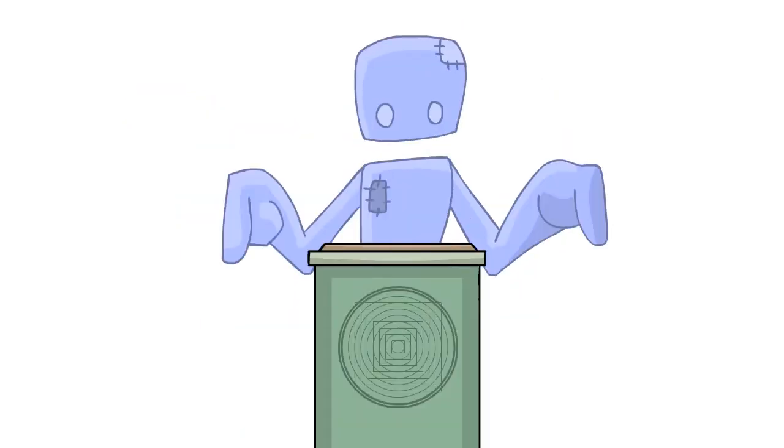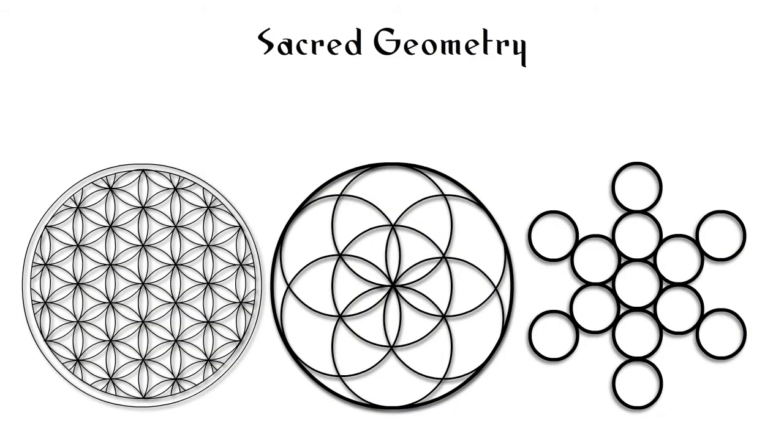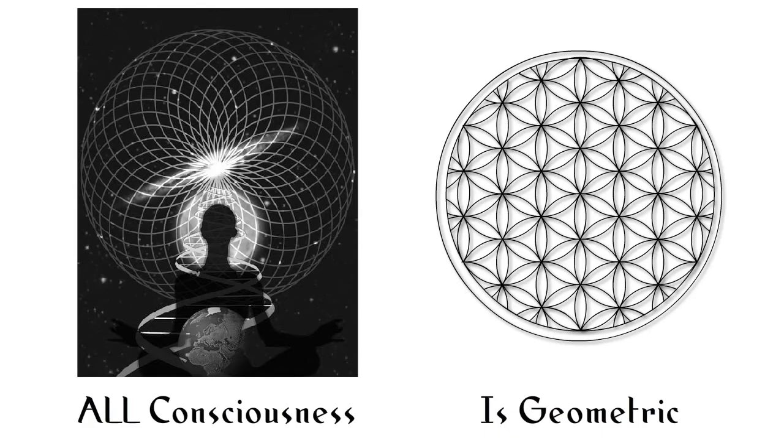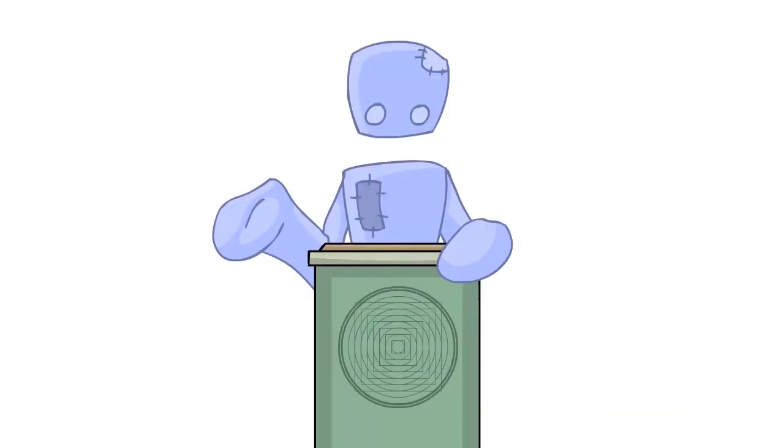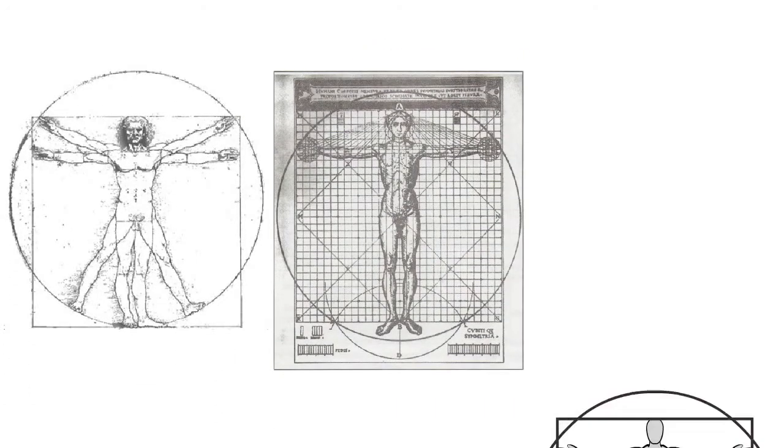One other thing before we get this rolling—I want to give an overview about what sacred geometry really is. Sacred geometry is the geometry of consciousness. It revolves around the idea that all consciousness, including human, is solely based on sacred geometry. Because it is, we can begin to see and understand where we have come from, where we are now, and where we're going.